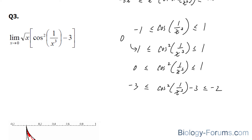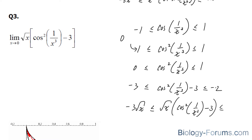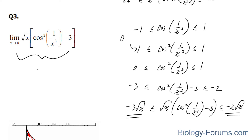Finally, we multiply every component by the square root of x, giving outer bounds of negative 3 times the square root of x and negative 2 times the square root of x. Taking the limit of each bound as x approaches 0 leads to 0, and via the squeeze theorem, the limit of this function also equals 0.